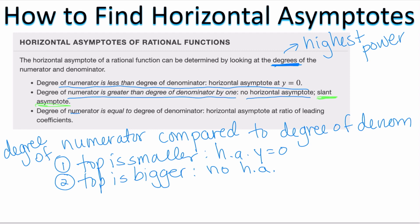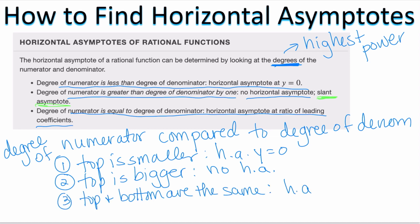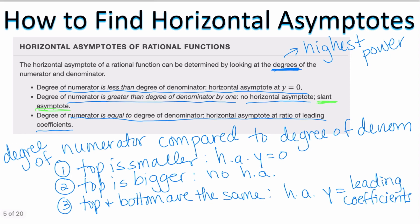If the degree of the numerator is equal to the degree of the denominator, then there is a horizontal asymptote and it is equal to the ratio of the leading coefficients. So if top and bottom are the same, then the horizontal asymptote is y equals the ratio of the leading coefficients. This is how we find horizontal asymptotes.